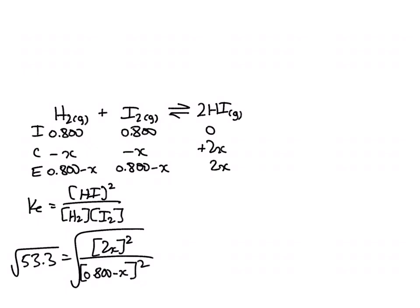So take the square root here. This would give me square root of 53.3, 7.30, equal to 2X over 0.800 minus X.